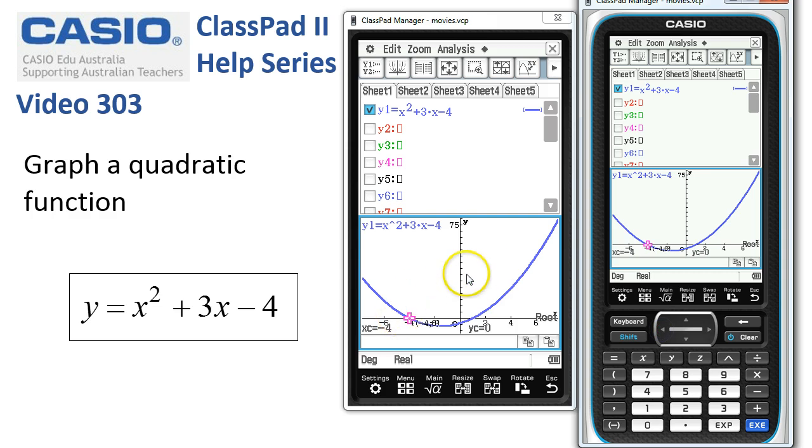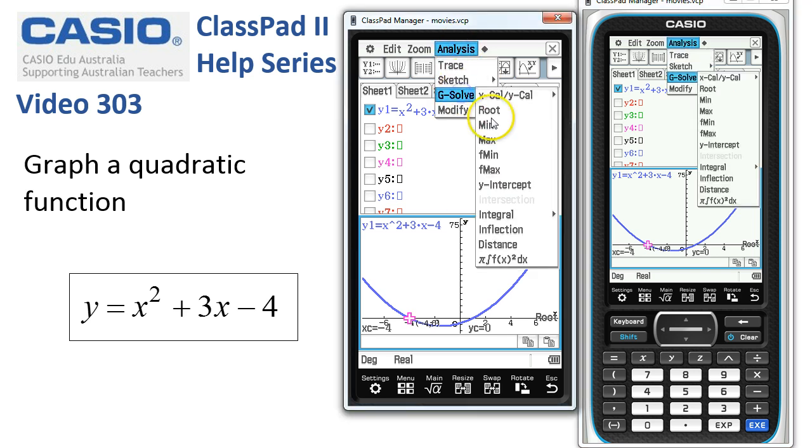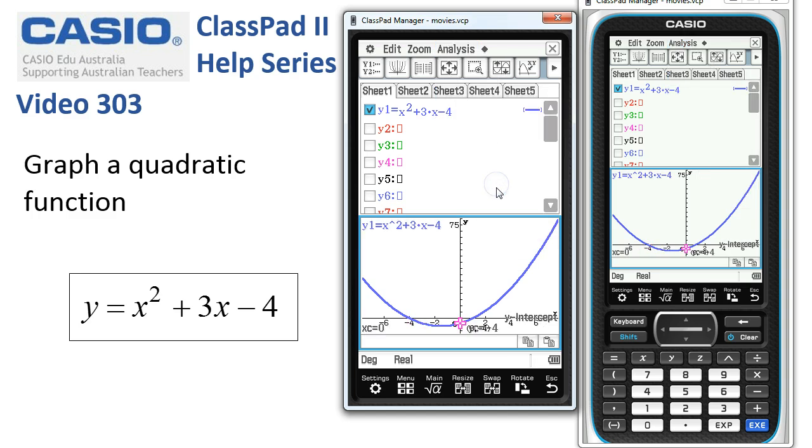To find the y-intercept of this function, we can do the same thing: analysis, G solve, y-intercept, and there's the y-intercept. And finally, to find the coordinates of the vertex.